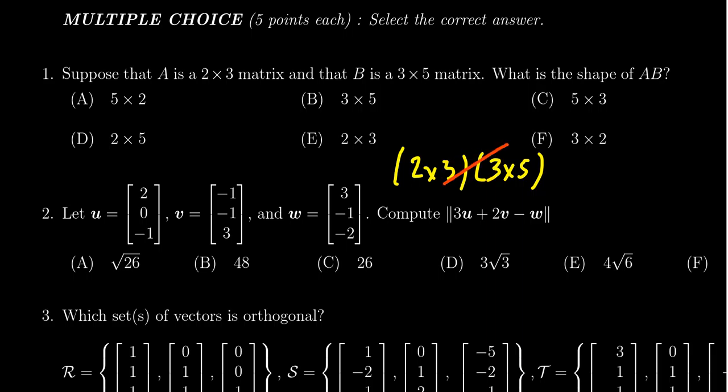We are going to remove these from consideration and so the resulting shape should be 2×5, which then gives us answer D.